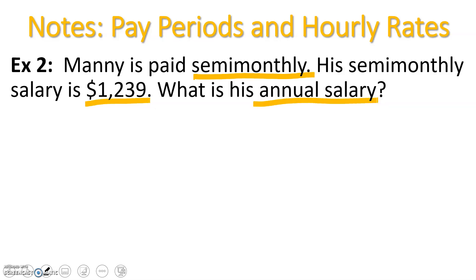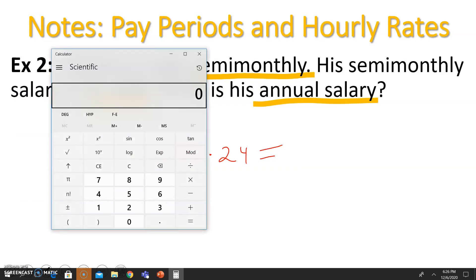What is his annual salary? He gets paid $1,239 twice a month for 12 months, so he will earn that amount 24 times. Using a calculator: $1,239 times 24 — his annual salary is $29,736.